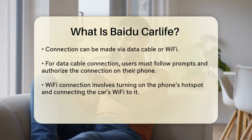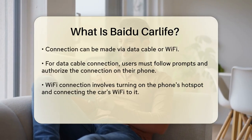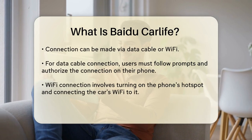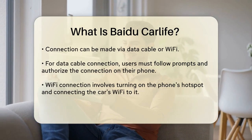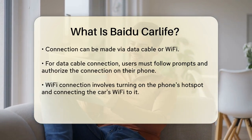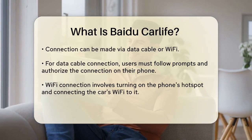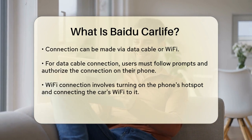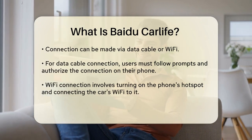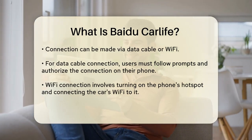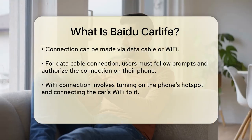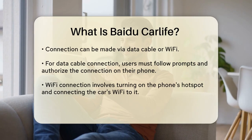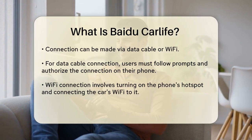Here's how it works. If you choose the data cable connection, you open the Baidu CarLife software on the car's infotainment system, follow the prompts to connect your phone using the data cable, and then confirm the connection on your phone. This requires authorization on your phone for the first connection.